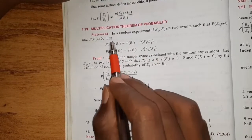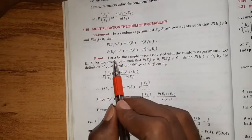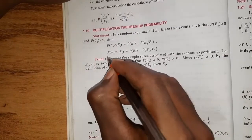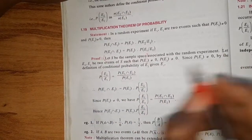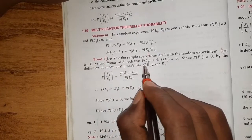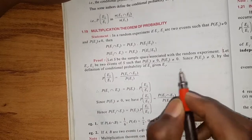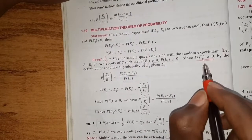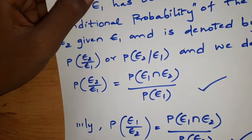Let S be the sample space. Let E1 and E2 be two events such that P(E1) is not equal to 0 and P(E2) is not equal to 0. Since P(E1) is not equal to 0, we can apply the conditional probability formula we studied previously, where the denominator is not equal to 0.